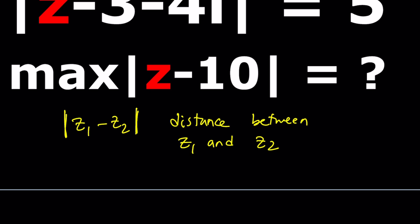Now what does the absolute value of Z minus 10 mean? It just means the distance between Z and 10 — 10 being the real number 10 comma 0 on the real axis.